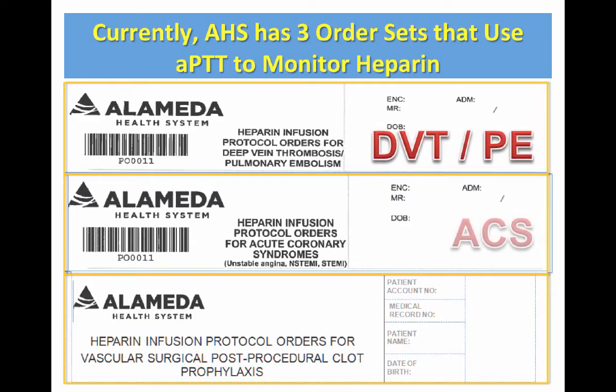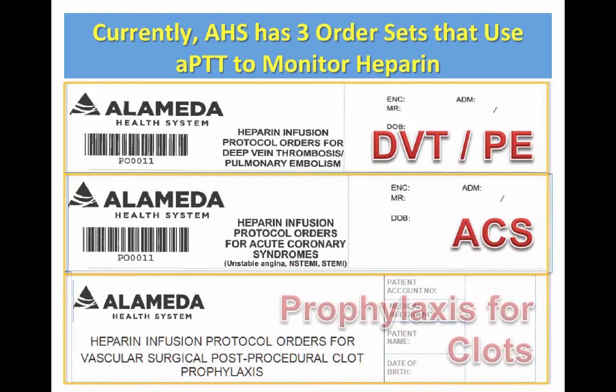Currently, Alameda Health System has three order sets that already use PTT to monitor patients on heparin. You can see DVT, PE, acute coronary syndrome, and clot prophylaxis for our post-surgical patients.